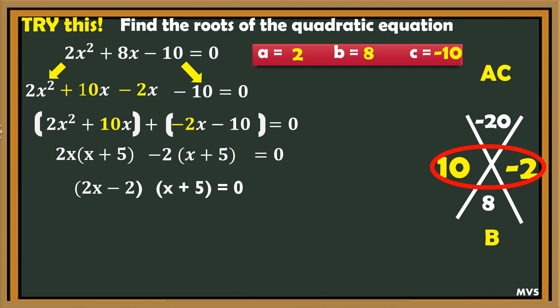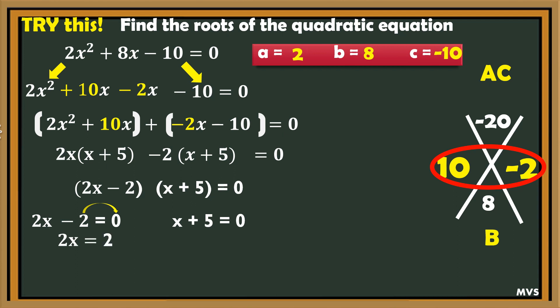Equate the two factors to zero: 2x minus 2 equals 0, and x plus 5 equals 0. Solving 2x minus 2 equals 0: transpose negative 2 to the right side — we have 2x equals 2. Divide both sides by 2, therefore x is equal to 1. Next, x plus 5 equals 0: transpose 5 to the right side so it becomes negative 5, therefore x is equal to negative 5. Going back to the problem, the roots of 2x squared plus 8x minus 10 equals 0 are 1 and negative 5.